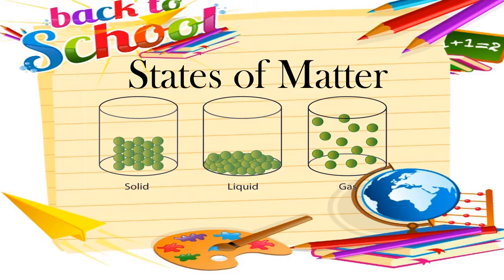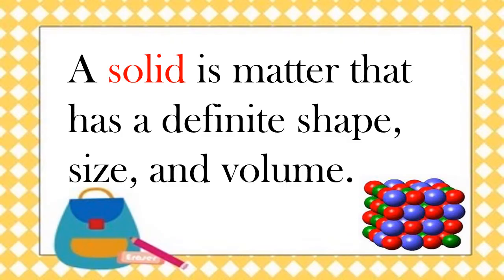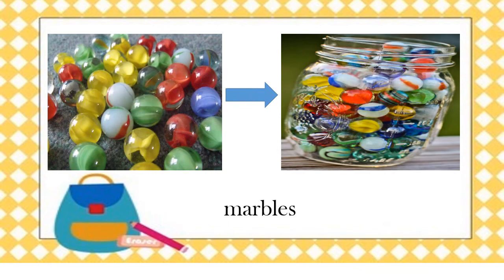Let's proceed to our next topic which is the states of matter. Matter comes in different states. They can be solid, liquid, and gas. A solid is matter that has a definite shape, size, and volume. A solid has its own shape and stays in one place unless it is moved. Even if you put it in one container then transfer it to another, a solid will not change its shape. The shape and volume of a solid, such as marbles, are definite and do not change no matter where you place them.